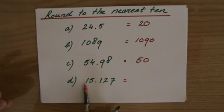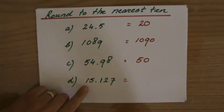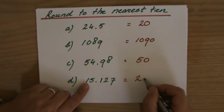The 1 stays a 1 or goes up to a 2. And it's exactly a 5 in the middle. Then we say it will go up. So 15 point blah-di-blah to the nearest ten is 20.